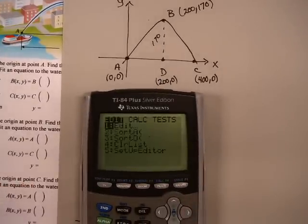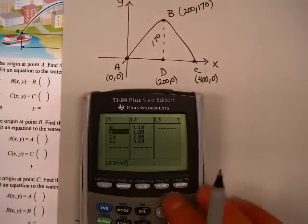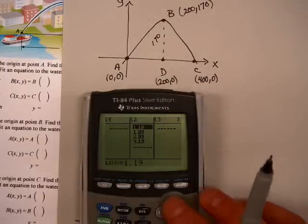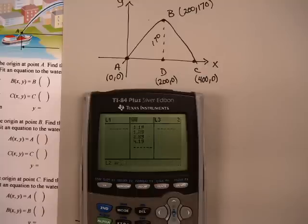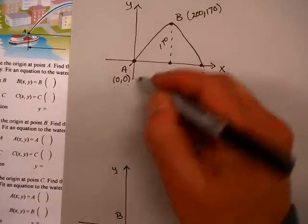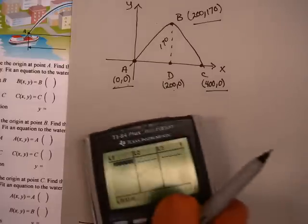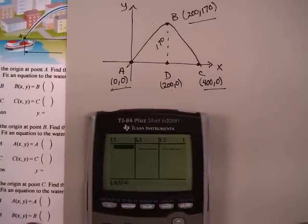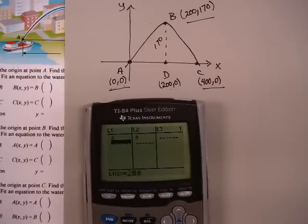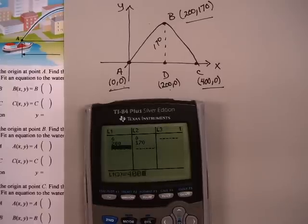So I hit STAT. And remember, the first thing you do is hit EDIT. Clear the list by going up to the top, to the top L1 here, hitting CLEAR and ENTER. Now go over to L2, hit CLEAR, then ENTER. Now let's put in the three points. Now remember, the only three points are A, B, and C. D, in this case, is not a point on the parabola. It was useful for figuring out what we were doing, but it's not a point on the parabola. So I put in my first point, 0, 0. My second point, 200, 170. And my third point, 400, 0.